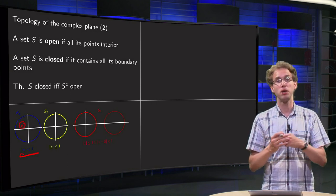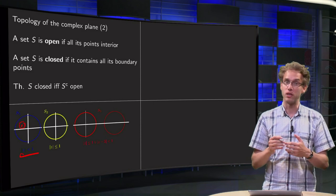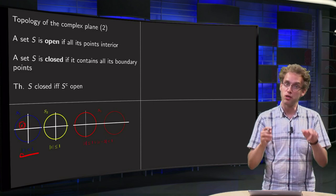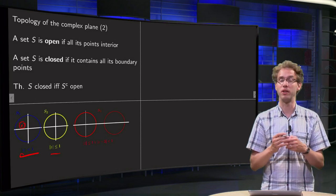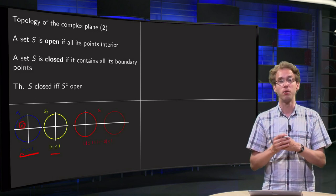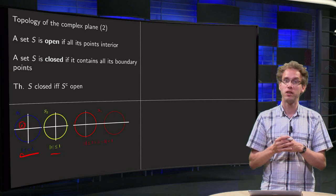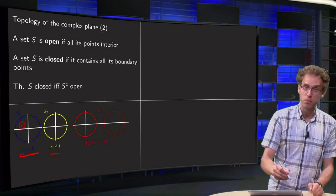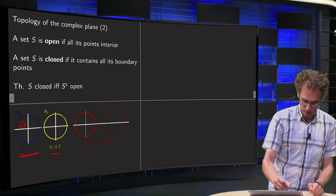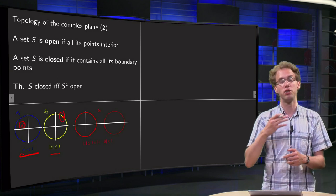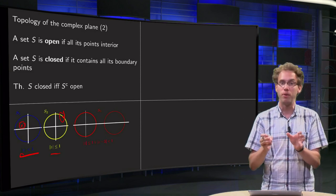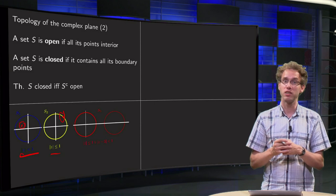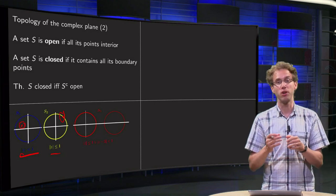Now let's see an example of a closed set. We can take almost the same, but now we include the boundary: the set of points where the norm is smaller than or equal to one. That's a closed set because it contains all its boundary points. Here we have, for example, a boundary point, because if you make a small circle around it, it contains both points of the complement and of the set itself, no matter how small you make the circle.